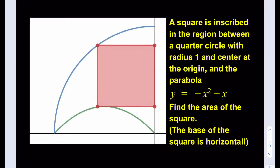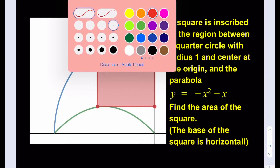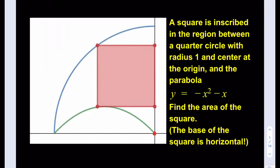Hello everyone. In this video we're going to be solving a geometry puzzle. A square is inscribed in the region between a quarter circle with radius 1 and center at the origin — so this is the origin here at (0, 0) — and the parabola y equals negative x squared minus x.